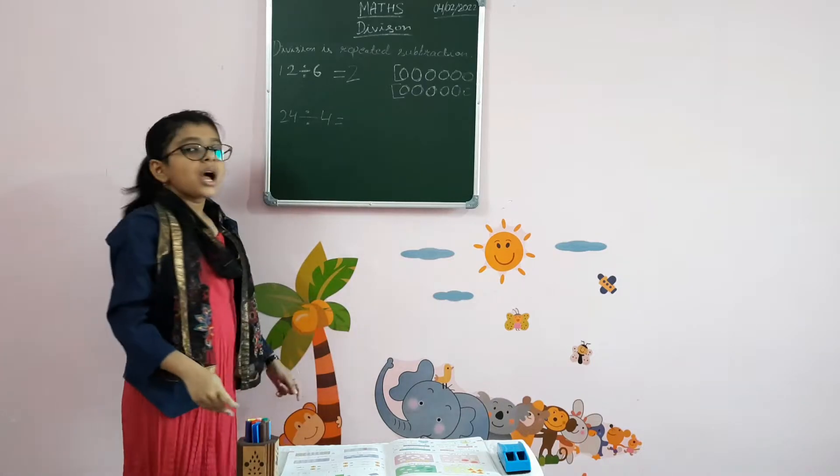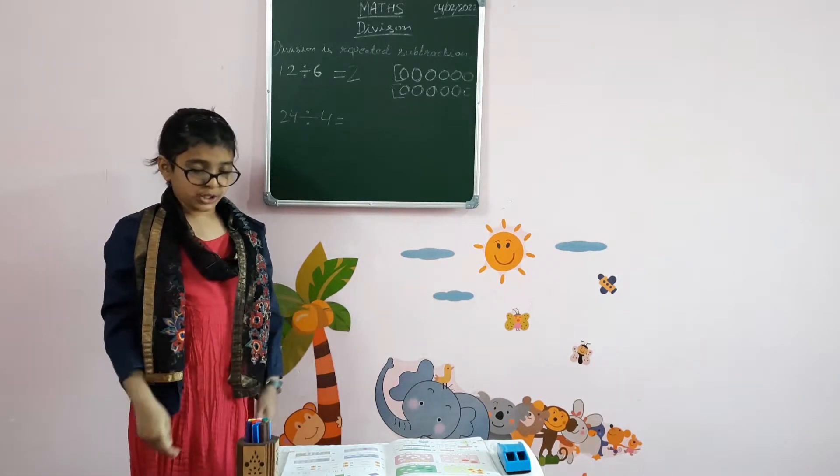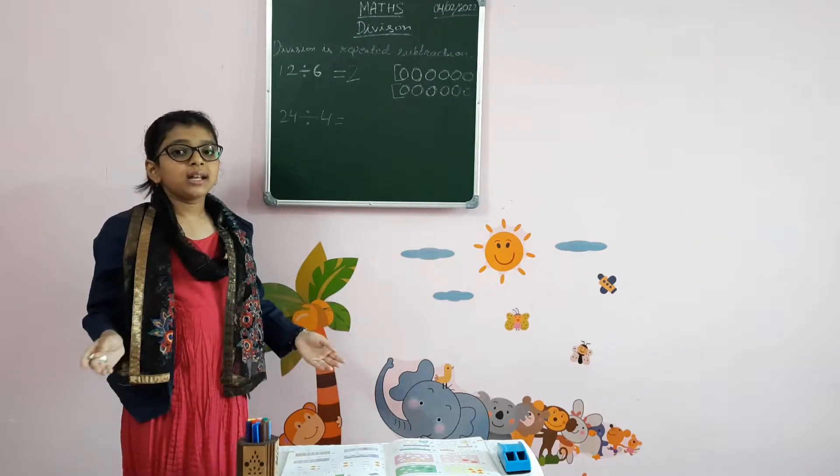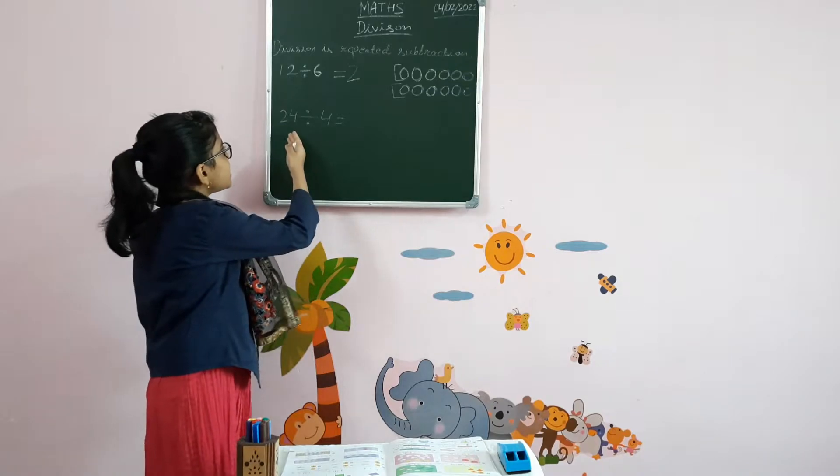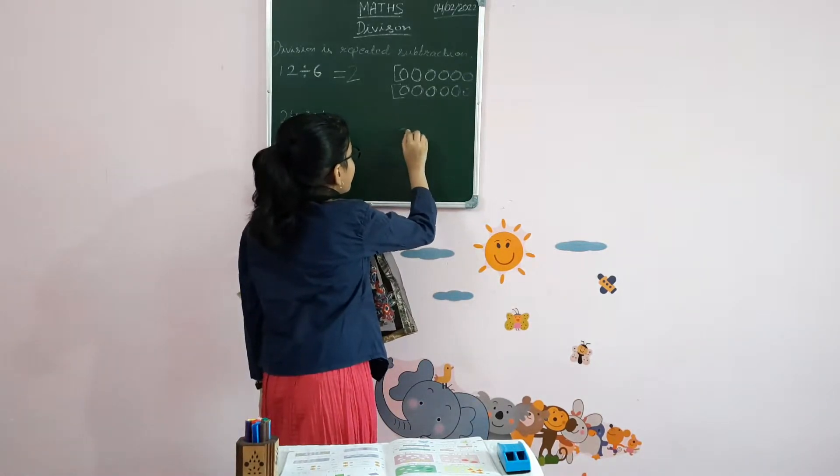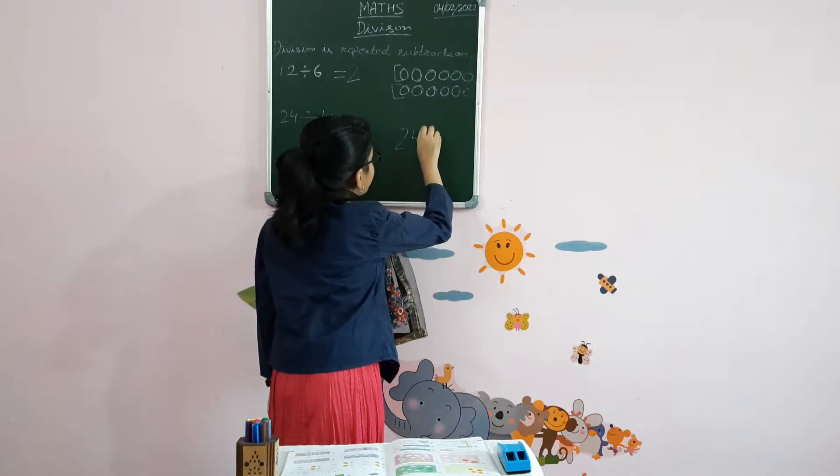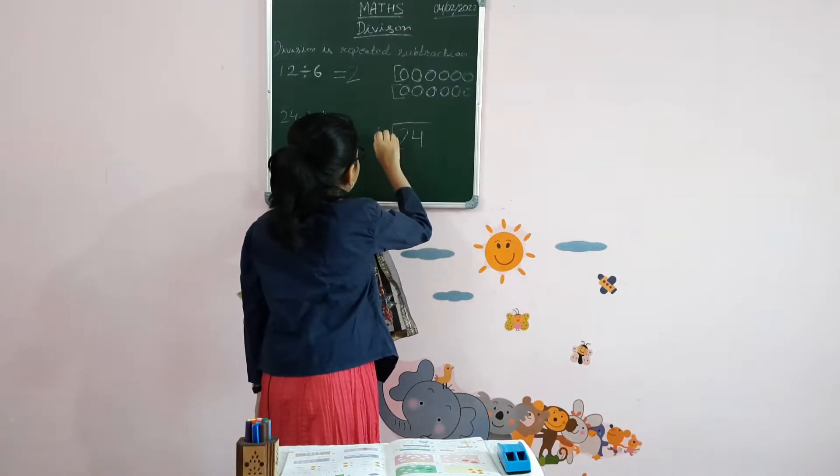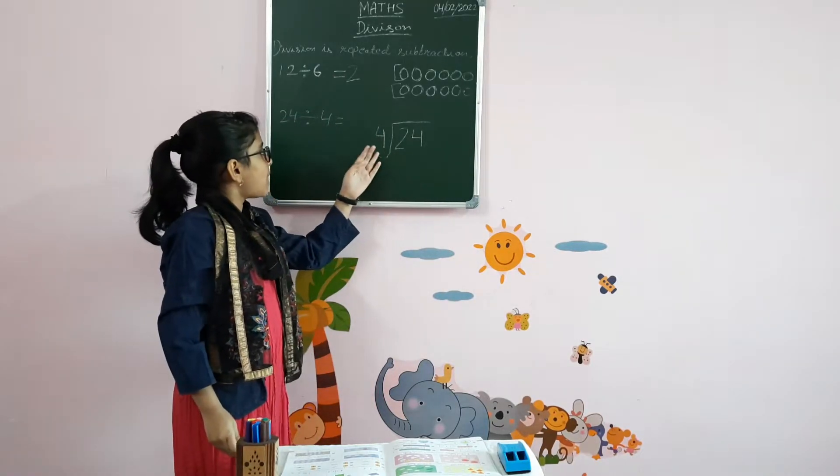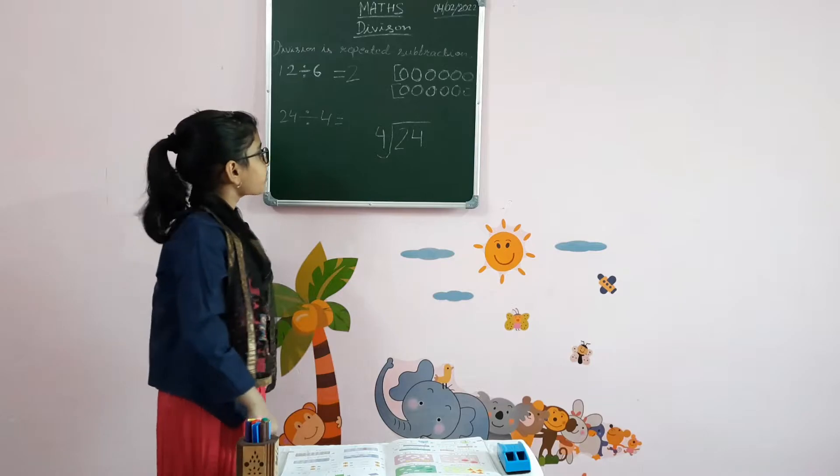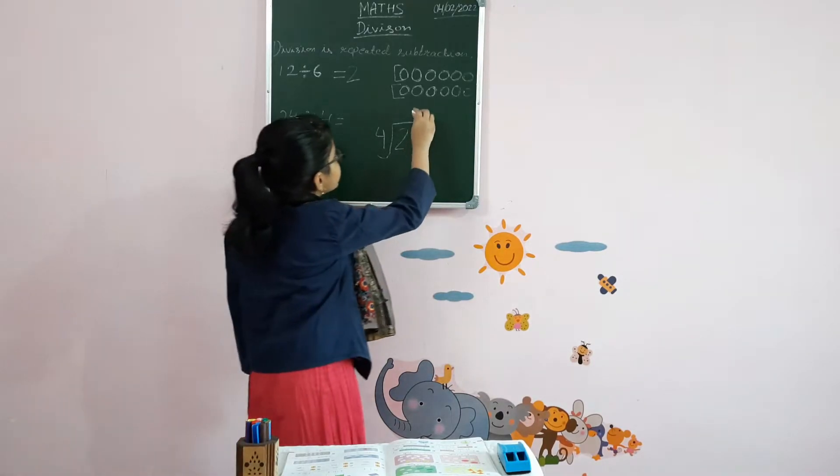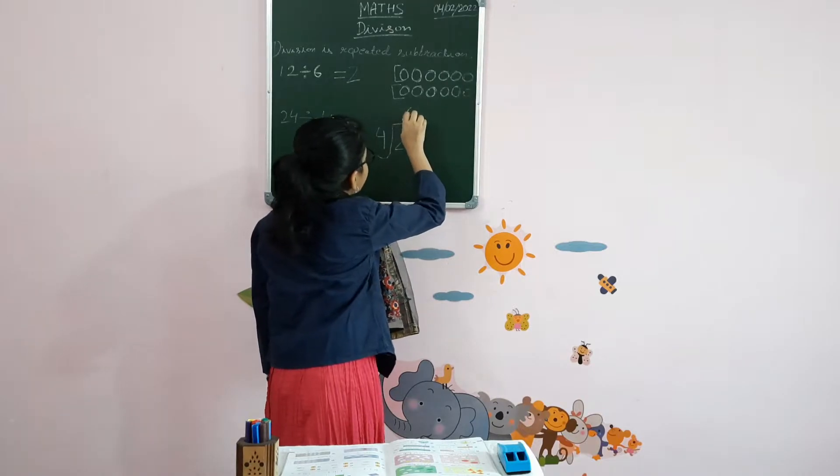Now let us move to our next question. But in this time, we will solve it in another way. 24 divided by 4. Let's arrange it. So, when does 4 go into 24? 4 times 6 is 24. So, we will write here 6.